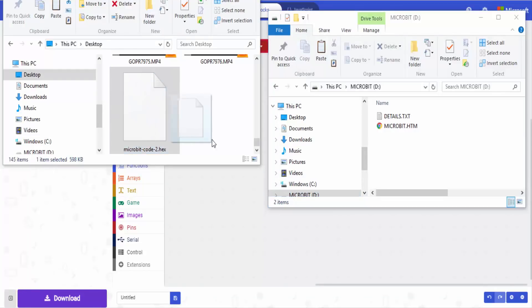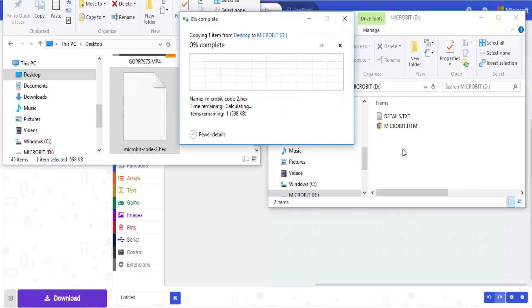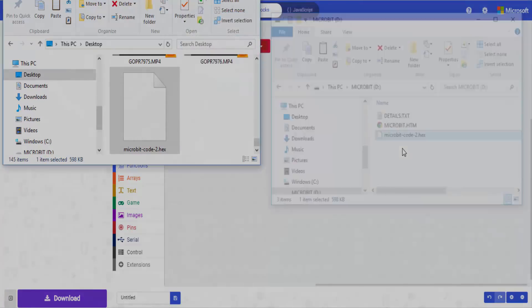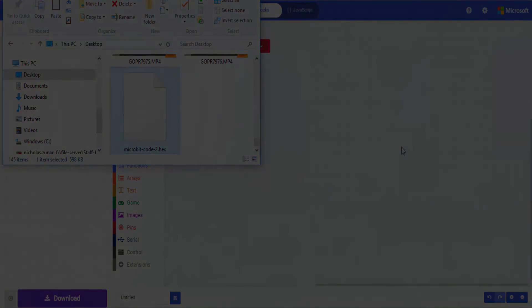To copy it over to your BBC micro:bit, plug your BBC micro:bit into the USB port of your computer and it should pop up as a drive. It's very simple to copy the code over. All you have to do is copy and paste to that drive and now that code is working on the BBC micro:bit.